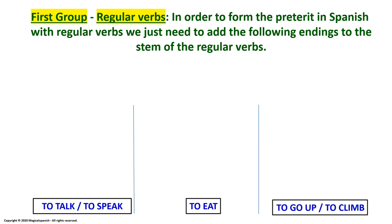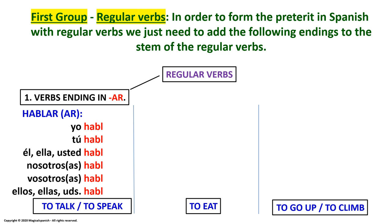Let's begin with the first group: regular verbs. In order to form the preterite in Spanish with regular verbs, we just need to add the following endings to the stem. We'll start with the first group — verbs ending in AR — and we are going to use HABLAR, meaning 'to talk' or 'to speak.' Pay attention: in red color, all different personal pronouns have the same stem, which in this case is HABL. Then we add a different ending. So in past tense, HABLAR would be conjugated like this.